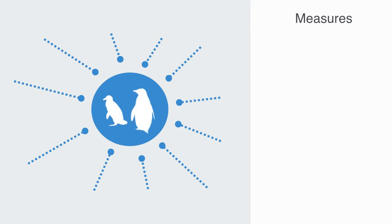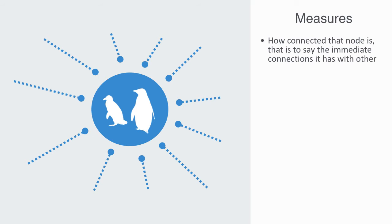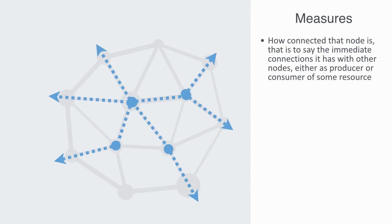The centrality of a node within an ecological network is quite a complex metric to define, as it is a product of a number of factors — such as how connected that node is, meaning the immediate connections it has with other nodes either as a predator or consumer of some resource.